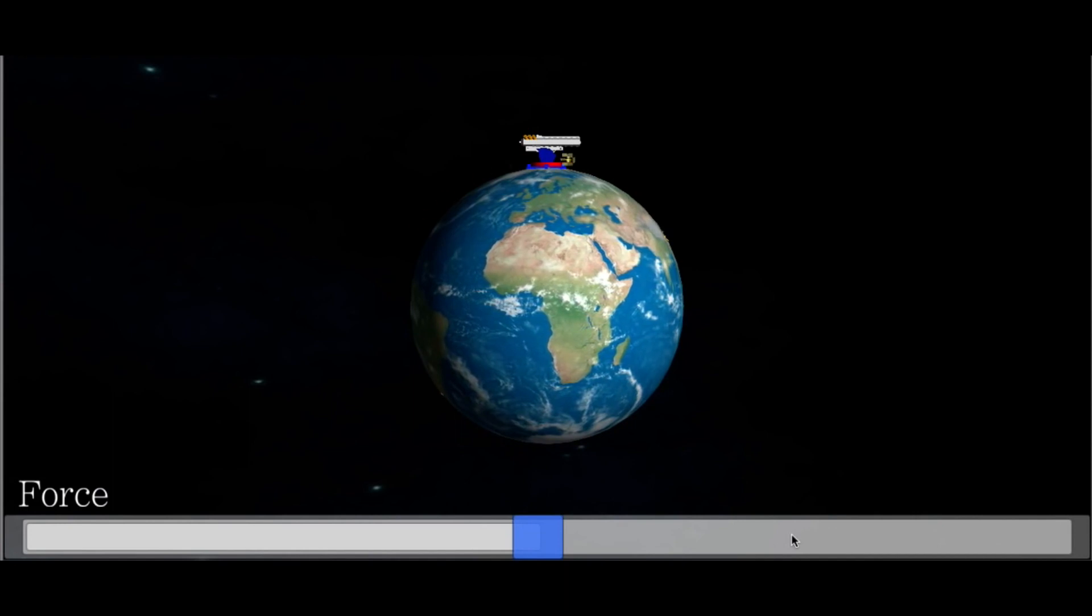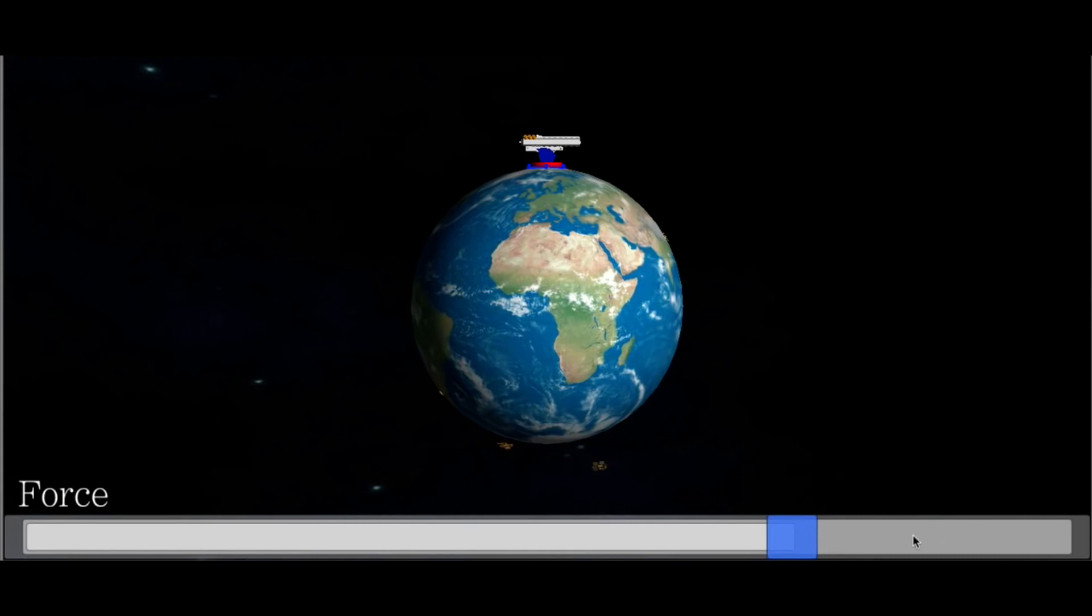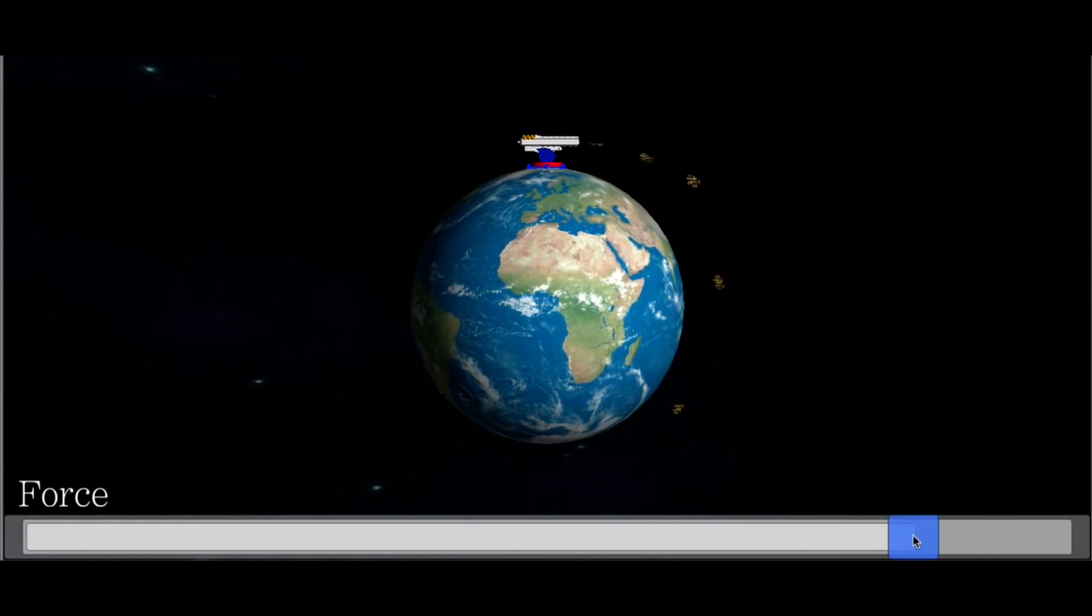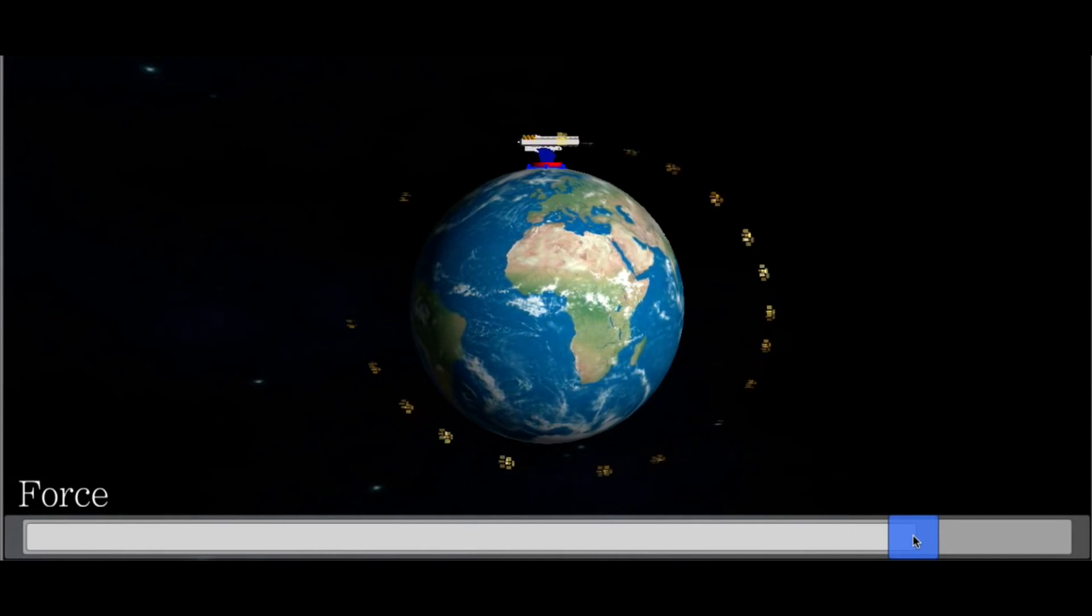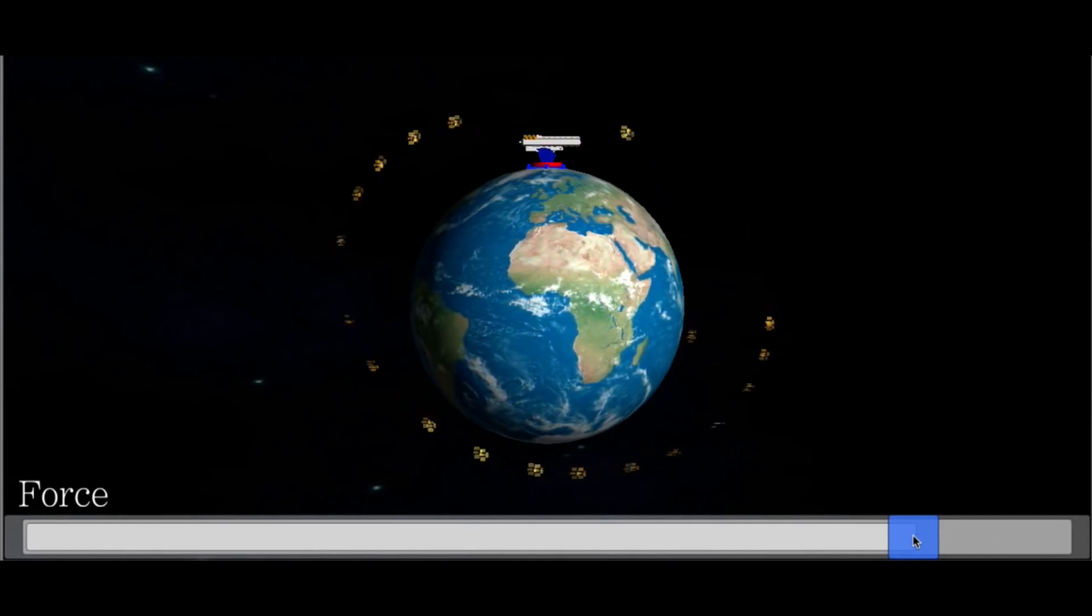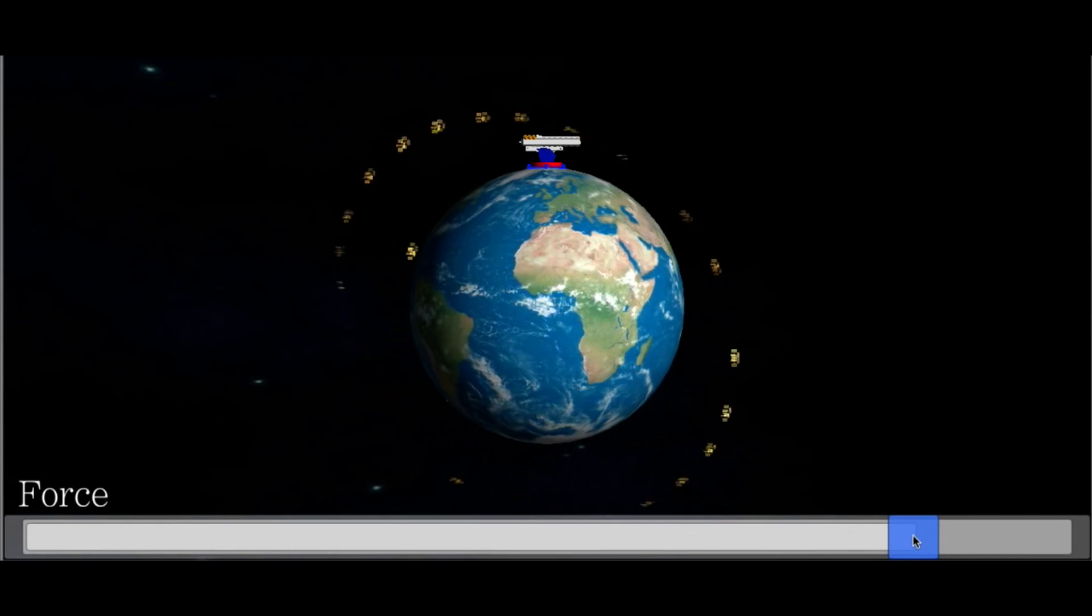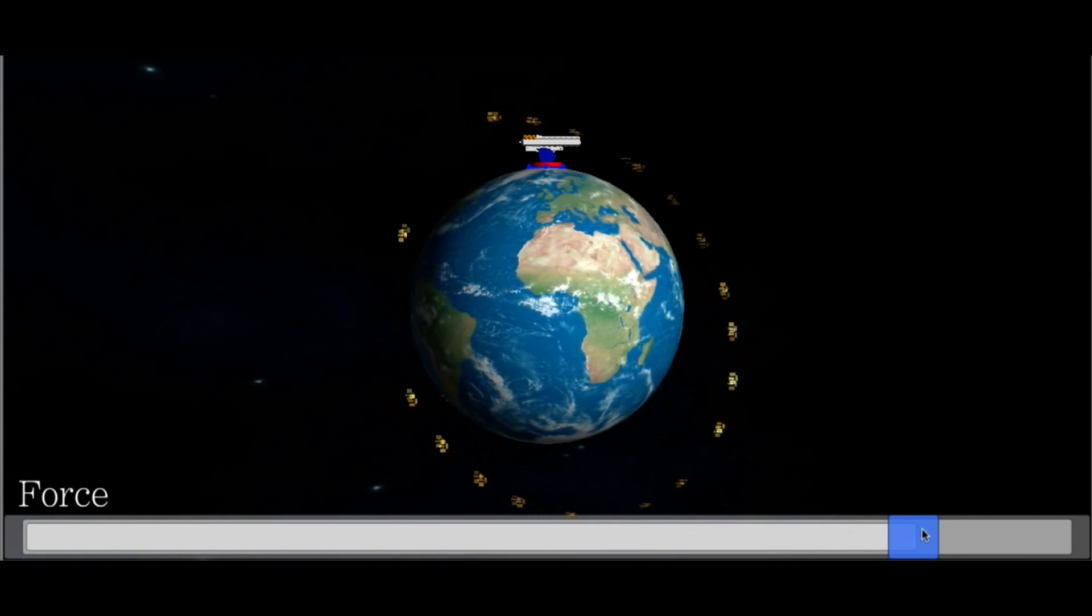You can get the cannonball to move around the earth as such assuming there are no acting forces like the atmosphere. Well this is the model used to explain how the moon goes around the earth and also how planets orbit the sun. And in fact how to put a satellite in orbit. Like I said this is rocket science.